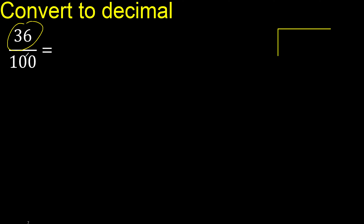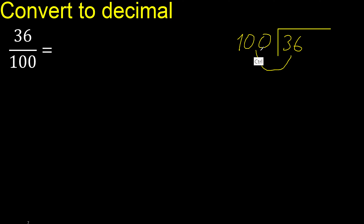36 divided by 100. 36 is less, therefore complete — always complete with 0. Here: 0. Point — point only once.